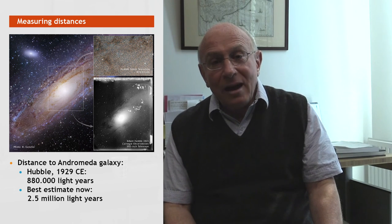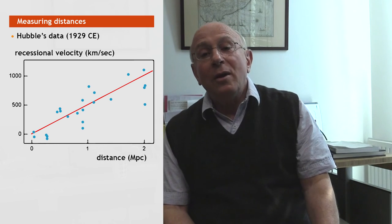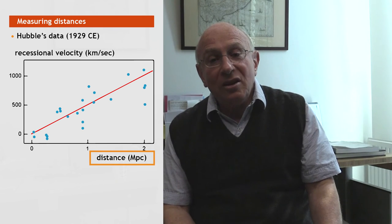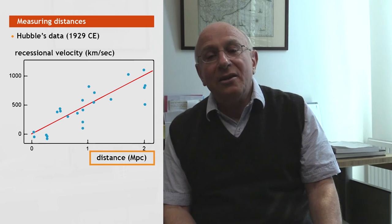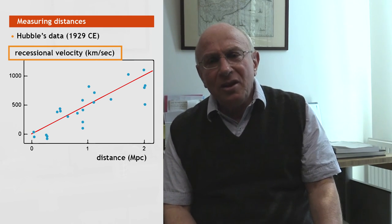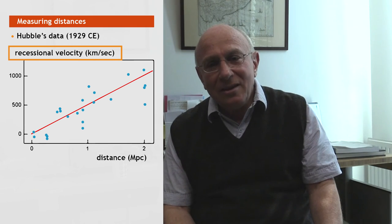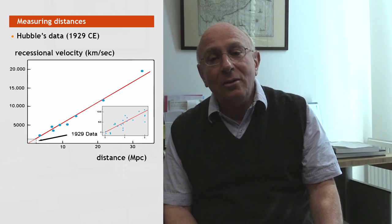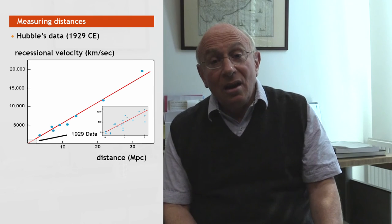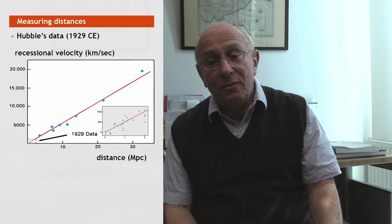He did this not only with the Andromeda galaxy but also with other nearby galaxies, and he started to make a graph. Here you see his first graph from 1929, with distance on the x-axis and recessional velocity — the speed with which things move away from us — on the y-axis. There is a clear tendency: the farther away, the faster they seem to move. When he extended these observations to much larger scales, the line became a lot straighter, very clearly showing that galaxies move faster away from us the farther they are.